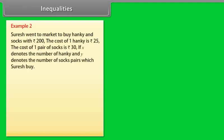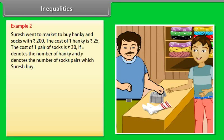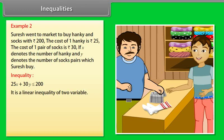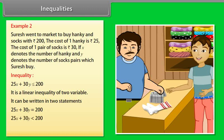Example 2: Suresh went to market to buy hanky and socks with rupees 200. The cost of one hanky is rupees 25 and the cost of one pair of socks is rupees 30. If x denotes the number of sock pairs Suresh buys, then we can represent the above statement as: 25x + 30y ≤ 200. It is a linear inequality of two variables. It can be written in two statements: 25x + 30y = 200, and 25x + 30y < 200. Statement A is an equality in this case.